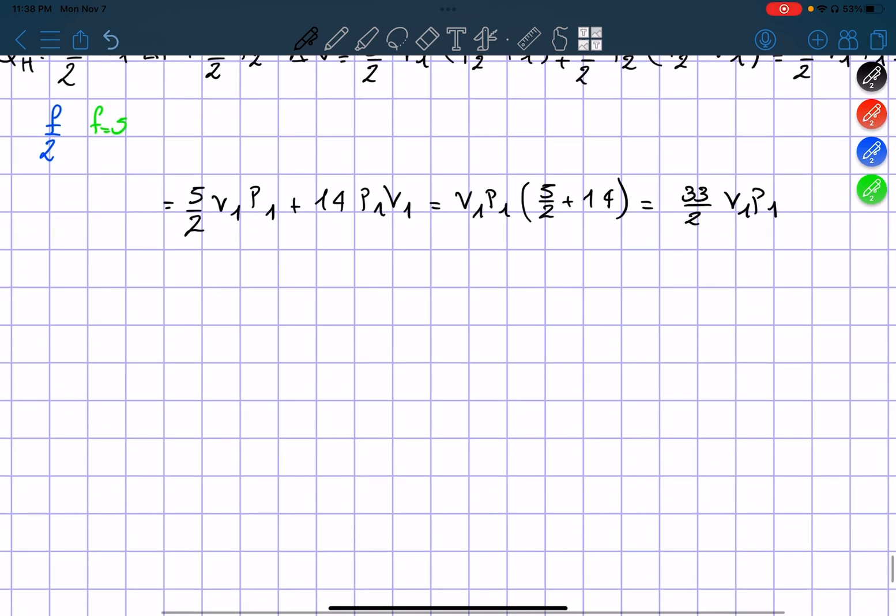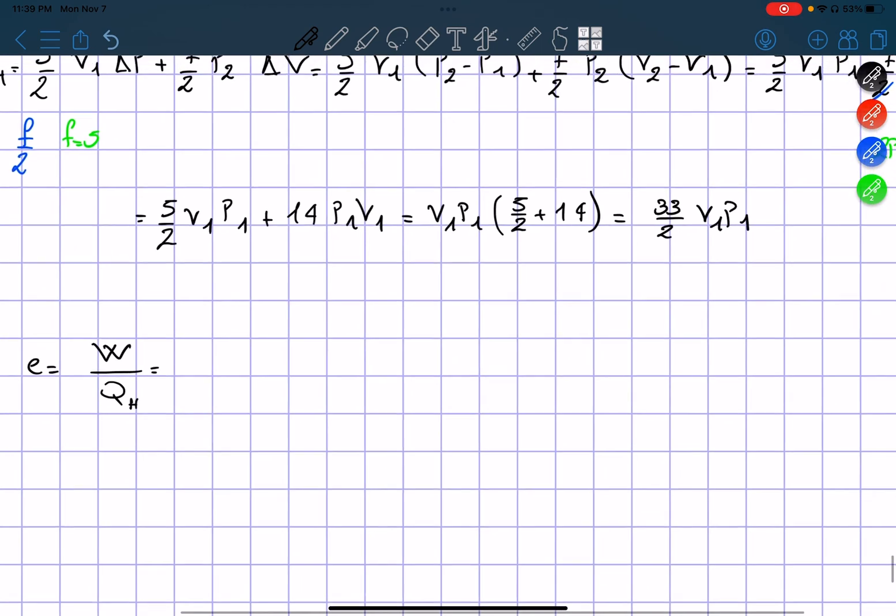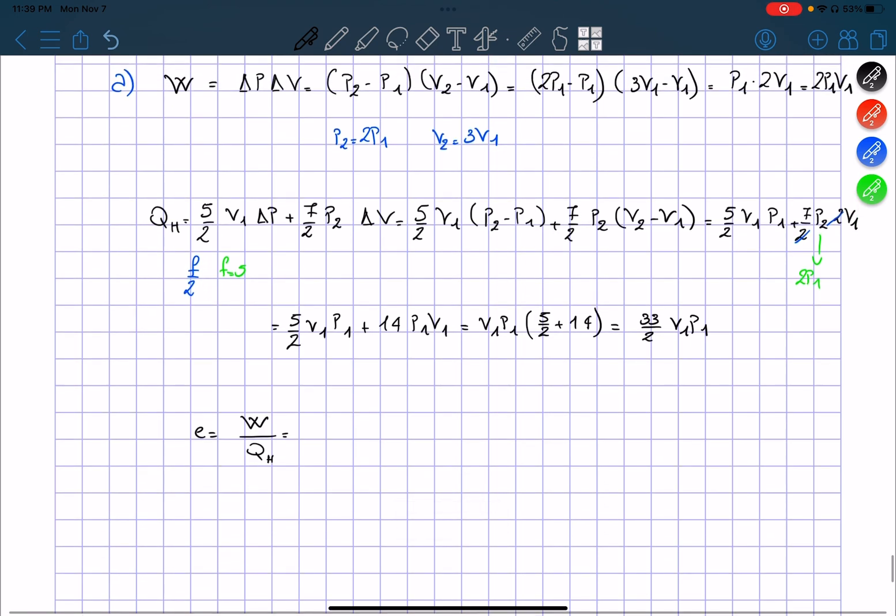So now in order to find the efficiency we just need to do work divided by the heat from the hot reservoir. So it equals, we find the work is equals to 2V1 P1 divided by 33 over 2 V1 P1.